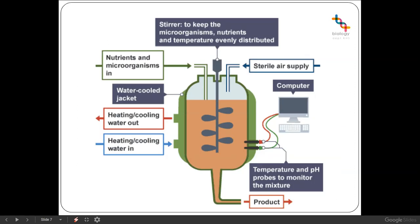When culturing microorganisms we usually use a computer-controlled fermenter to control the conditions. One of the main things to control is temperature. We have a temperature probe monitoring the mixture and heating or cooling water circulating in a water-cooled jacket surrounding the fermenter — like a big hot water bottle — which may be full of warmer or colder water depending on what the organism requires. Water circulates in and back out to maintain a steady temperature.